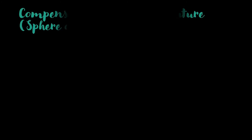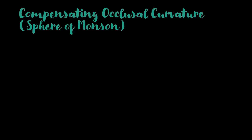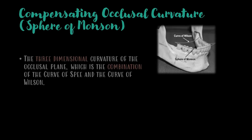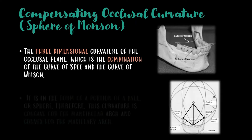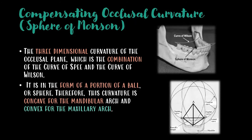The compensating occlusal curvature, or the sphere of Monson, is the three-dimensional curvature of the occlusal plane, which is the combination of the curve of Spee and the curve of Wilson. It is in the form of a portion of a sphere, and therefore this curvature is concave for the mandibular arch and convex for the maxillary arch.